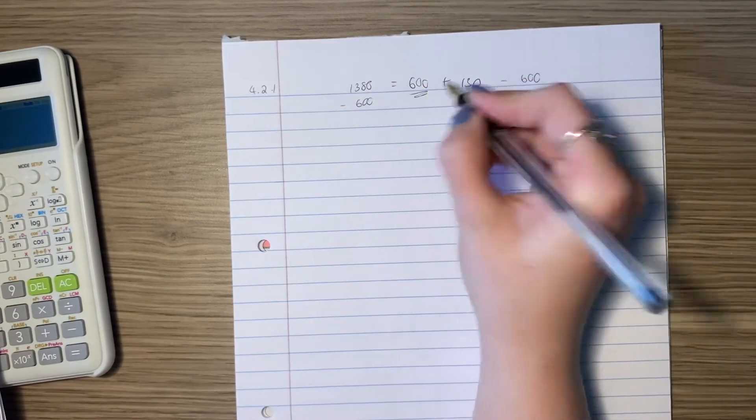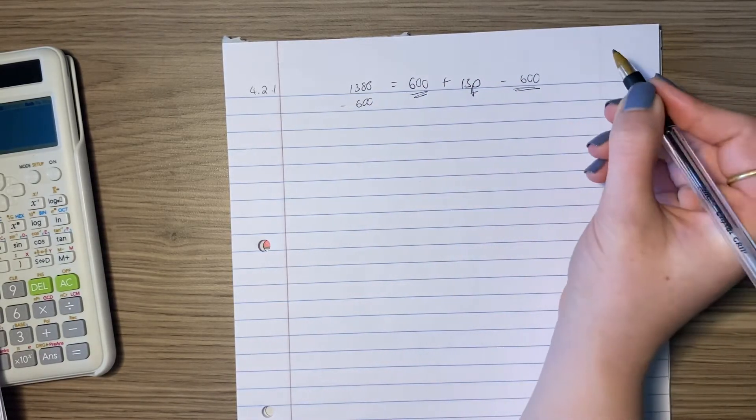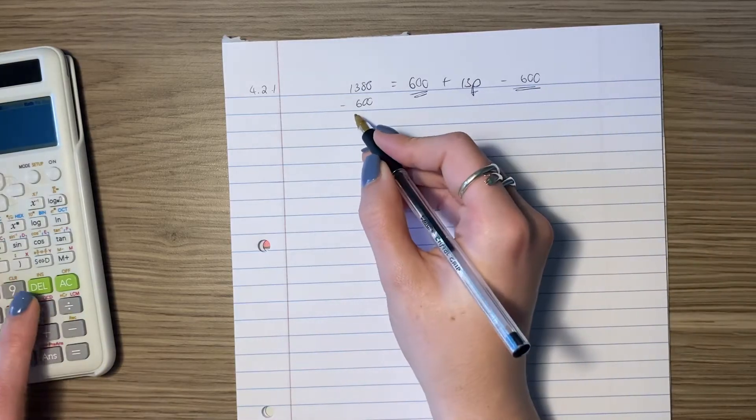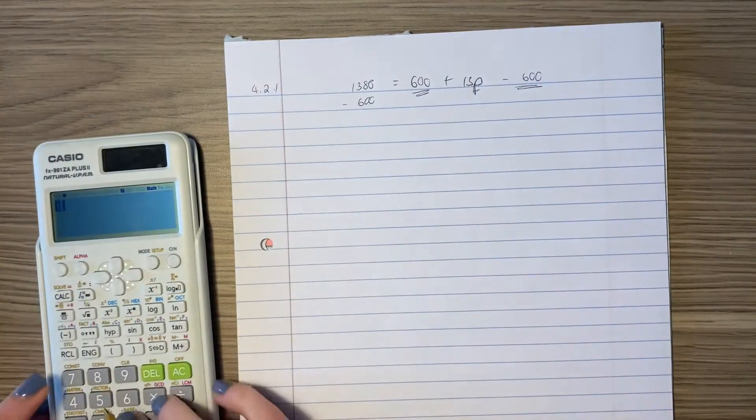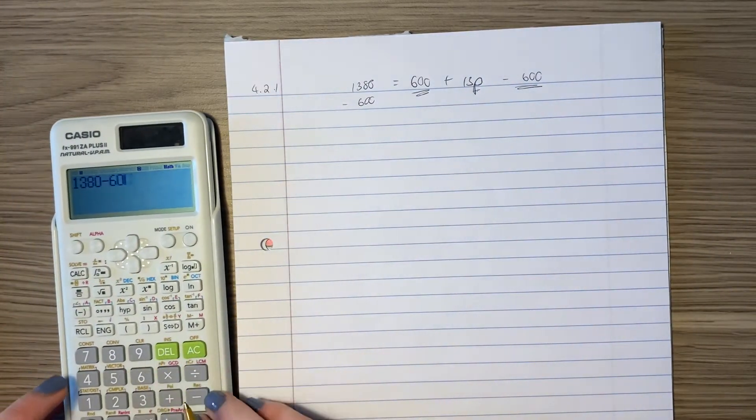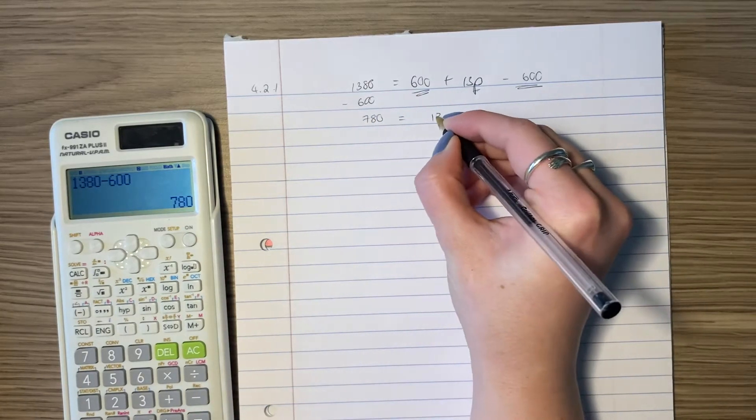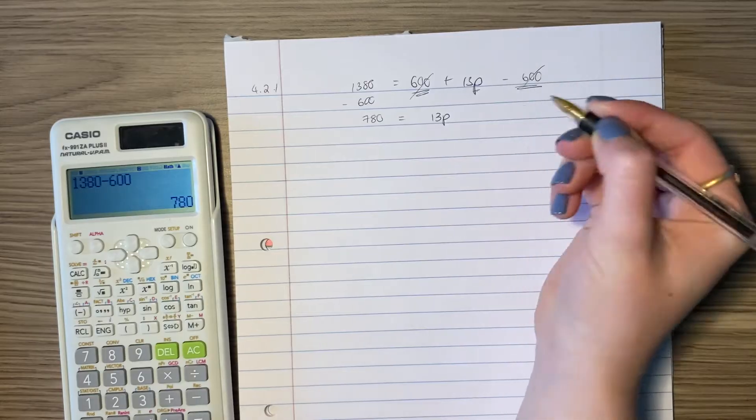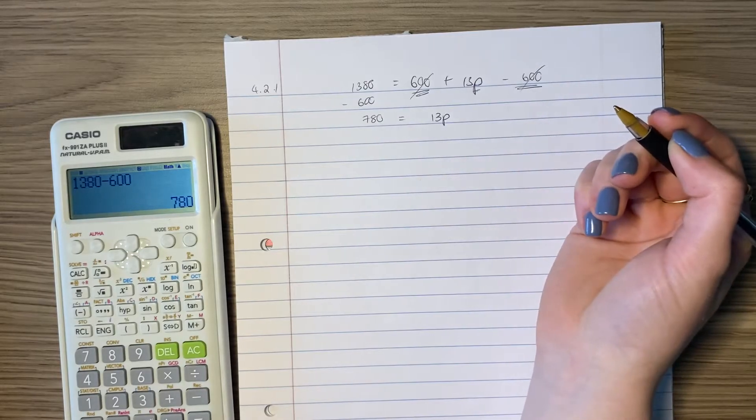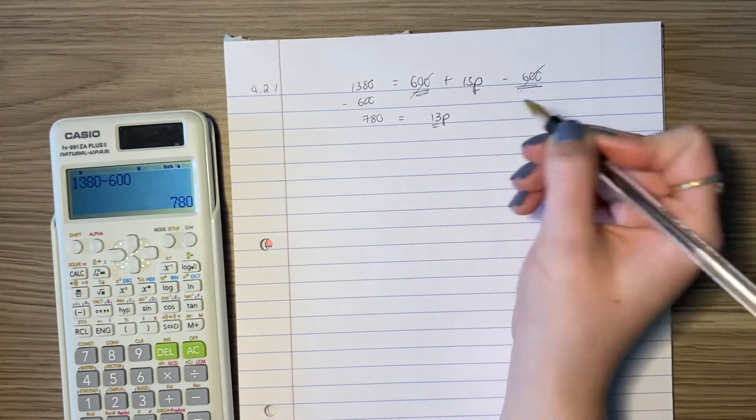So I want to get rid of this. On this side it's plussed, so I'm going to take it away, but what I do to the one side I have to do to the other side. So 1380 minus 600 is going to be 780. These fall away because 600 minus 600 is 0.